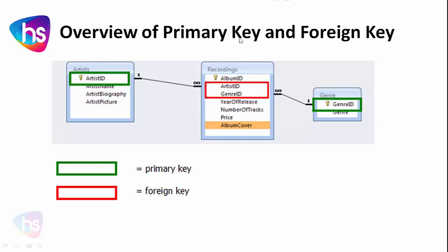In the middle, there is a Recordings table with two columns: ArtistID and GenreID. These two columns are foreign keys in the Recordings table. The major primary key of the Recordings table is AlbumID.